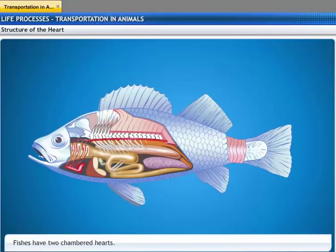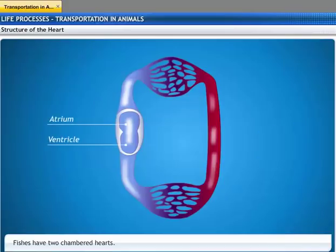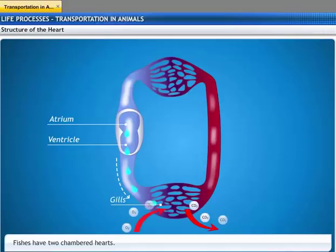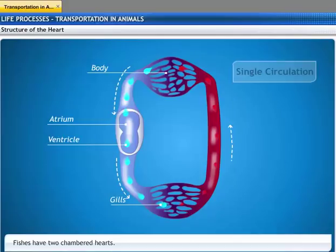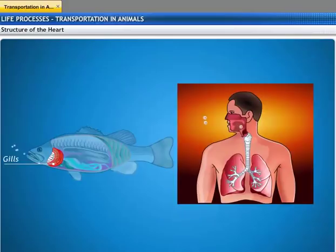Fishes have two-chambered hearts that have one ventricle and one atrium. The deoxygenated blood from the ventricle is pumped into the gills, where the exchange of oxygen and carbon dioxide takes place. The oxygenated blood then passes to the rest of the body and eventually returns to the atrium. Thus, blood circulates through the heart only once in the cycle — therefore, this type of circulation is known as single circulation. Fishes are able to extract 80% of the oxygen contained in water passing over their gills, whereas human beings can extract only about 25% of oxygen from inhaled air.